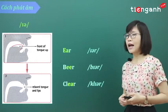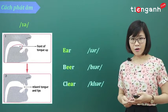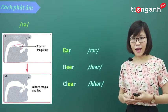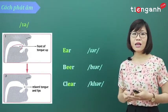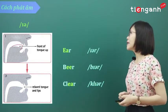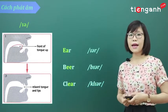Từ thứ 2 là beer, beer. Và từ thứ 3 là từ clear — rõ ràng. Chúng ta đọc lại nhé: ear, beer and clear. Ok? Vậy thì, âm nào của chúng ta sẽ được phát âm là 'ear'?